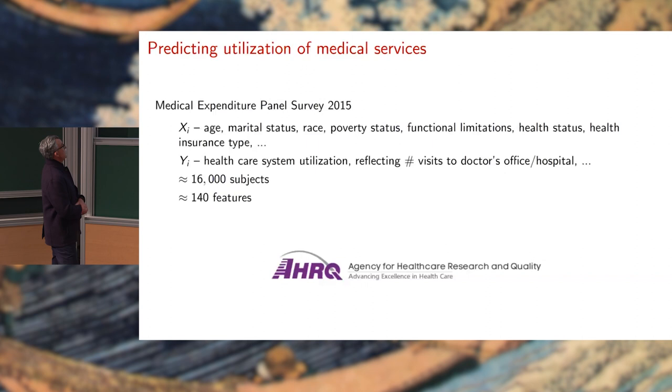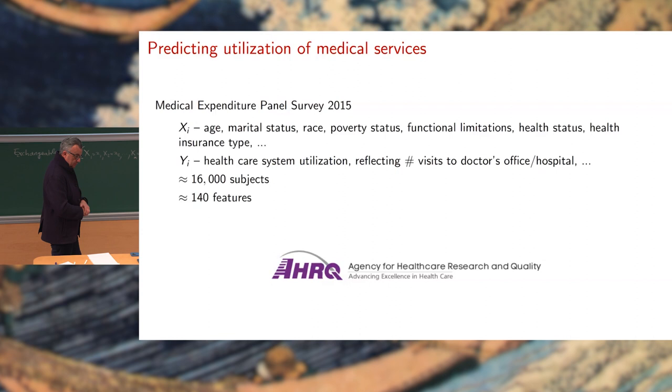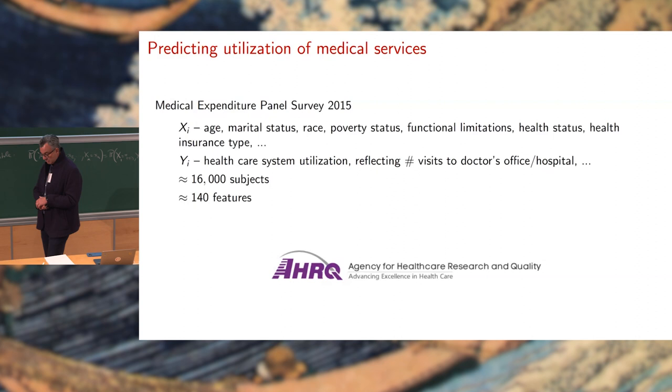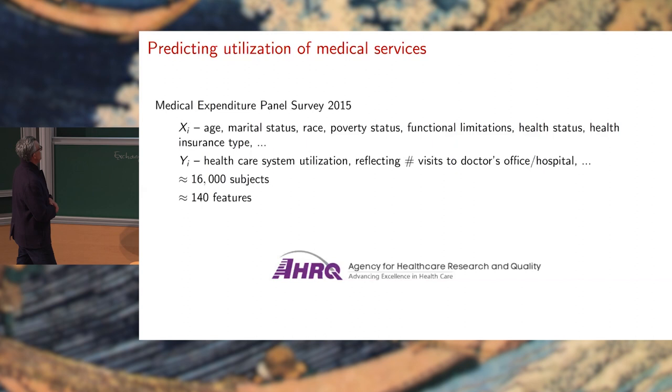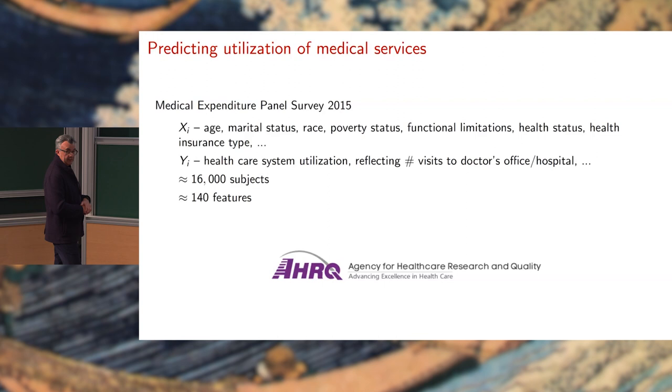And then you're going to pick the quantile of your conformity scores and you're going to include a point Y in the prediction if the conformity score you see is typical. That is, it's in the bottom 90%. And you can use this and the exact same argument applies and you're going to be correct 90% of the time. So, you have a machine that turns a predictive engine into an uncertainty quantification engine. Okay. So, this works extremely well. Here's just an example. You're trying to predict the use of medical services as measured by the number of visits to a hospital or doctors and you have lots of covariates including your age, your marital status, your race, your poverty status, your health insurance type and so on. And so, you have lots of features, lots of subjects, the kind of stuff that you all know about.